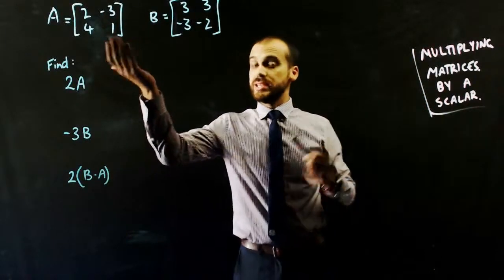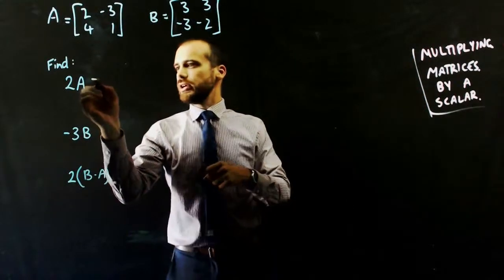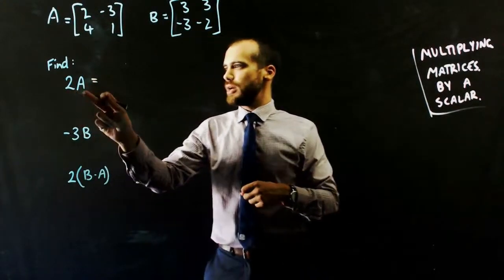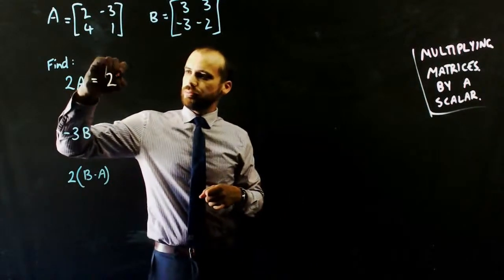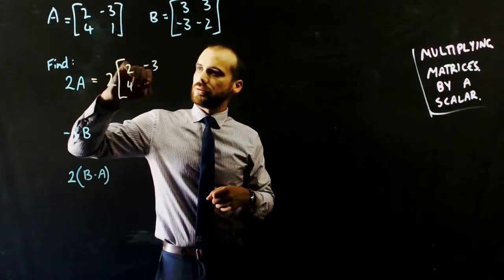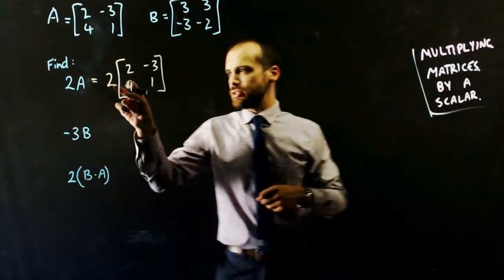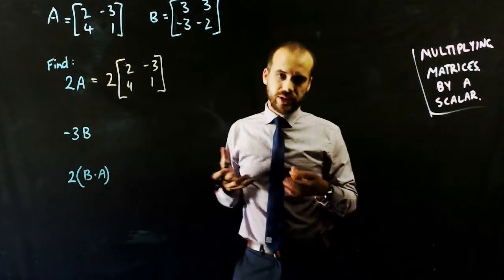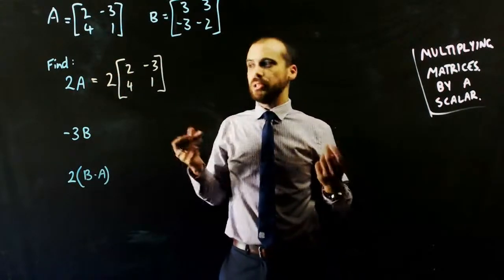So I've got two matrices here, and I'm going to find 2 times A. So that is simply 2 times the matrix. And that's 2 times every element in the matrix. Essentially, I'm just doubling the matrix.